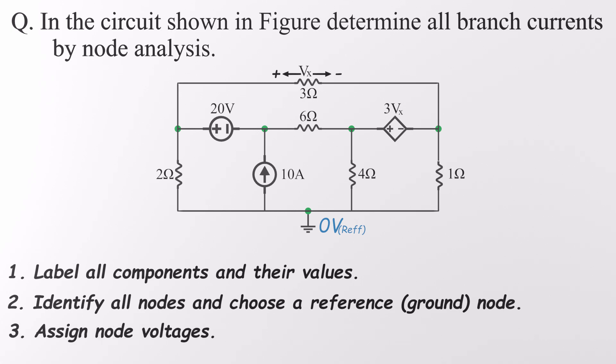Next up, assigning voltages to the other nodes. Normally, we'd start with any voltage sources directly connected to ground, since they give us node voltages right away. But in this circuit, none of the voltage sources are tied to the reference node. So we'll label the remaining unknowns as V1, V2, V3, and V4. These are the voltages at each node, measured relative to ground. With those in place, we're ready for the next step, assigning current directions and voltage polarities.